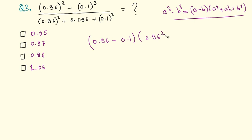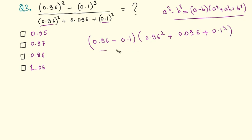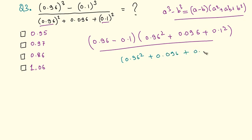Expanding: 0.96 squared plus 0.96 into 0.1, which is 0.096 since we shift the decimal point one to the left, plus 0.1 squared. The denominator is also 0.96 squared plus 0.096 plus 0.1 squared. These two terms are the same, so we can cancel them out.